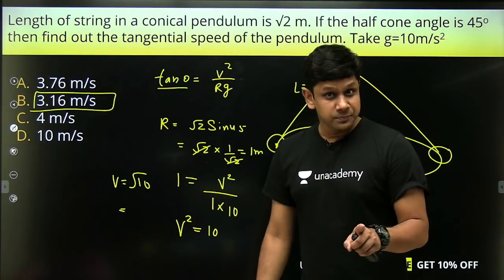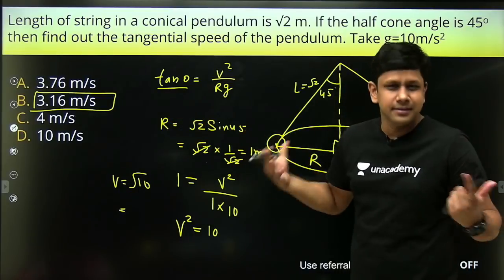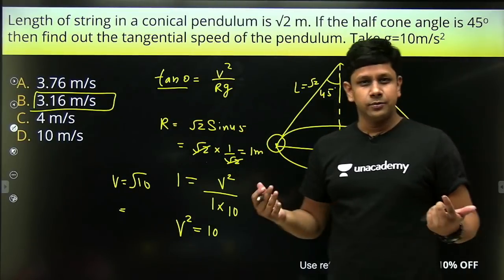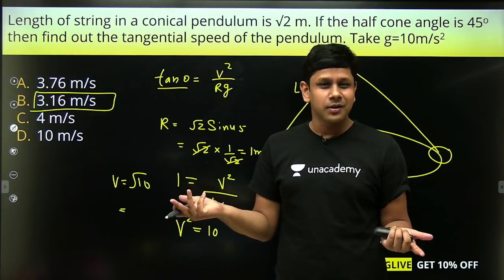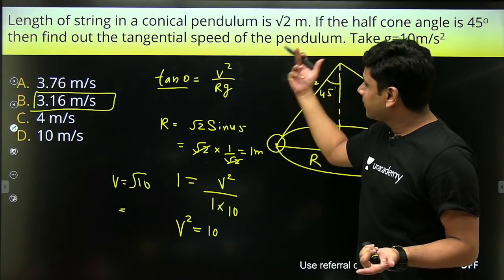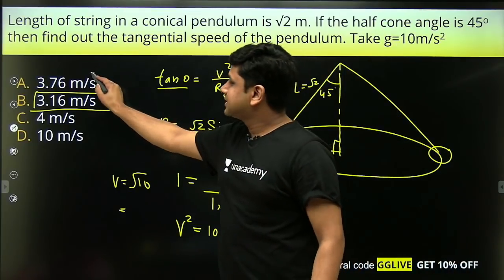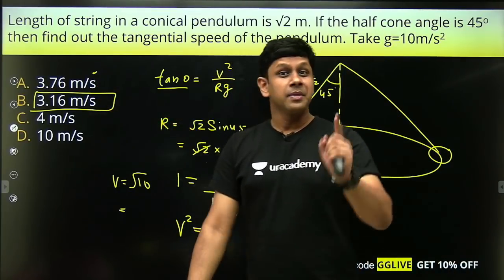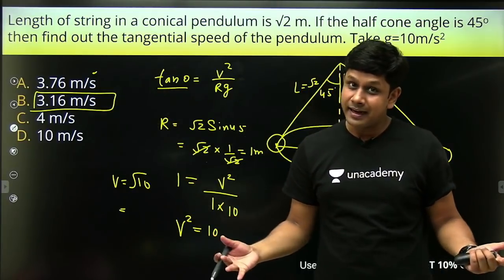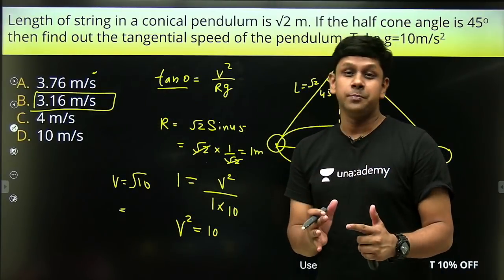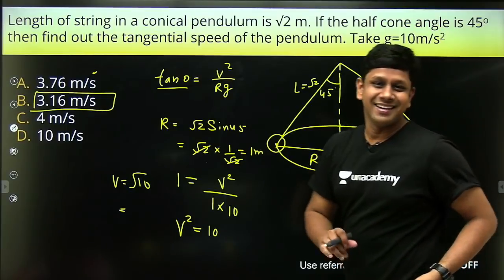One more point: if you mistakenly put radius = √2 m (because that's the given length of string), your answer will come out as 3.76 m/s, which is wrong. That wrong option is placed at the top to trap you. Always use radius, not the string length.